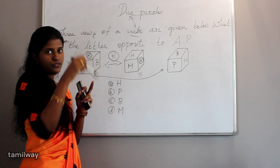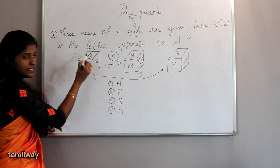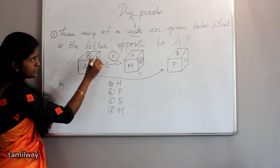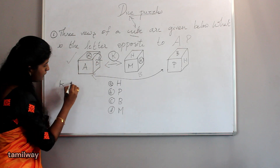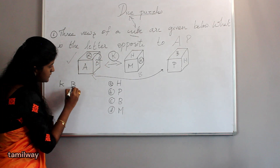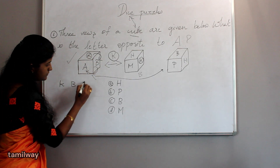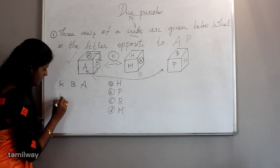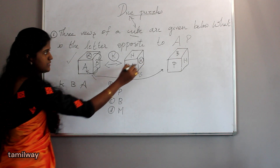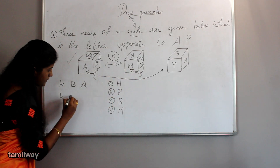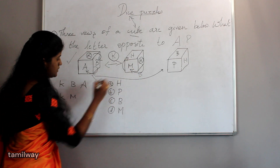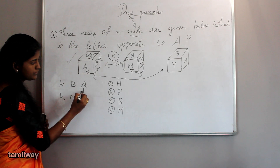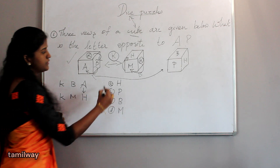Clockwise method: from the first cube, starting at K, go clockwise — B, then A. From the second cube, starting at K, go clockwise — M, then H. Now what is opposite? The answer is H.